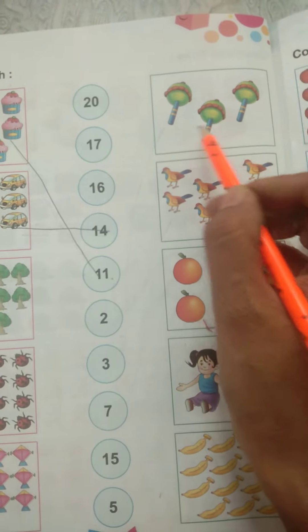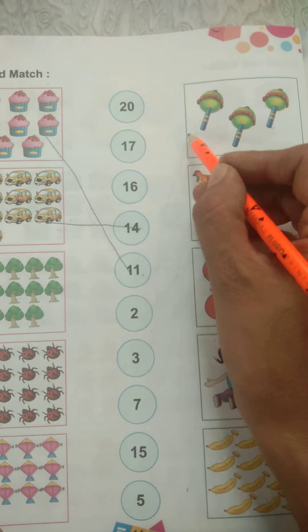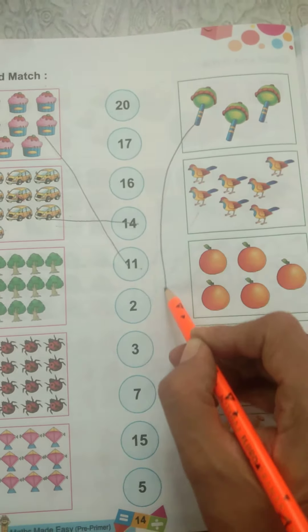Now count these toys. 1, 2, 3. Match with 3.